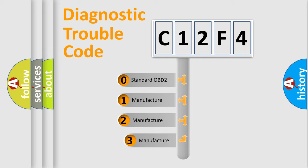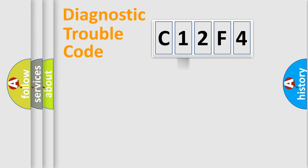If the second character is expressed as zero, it is a standardized error. In the case of numbers 1, 2, or 3, it is a more prestigious expression of the car-specific error.